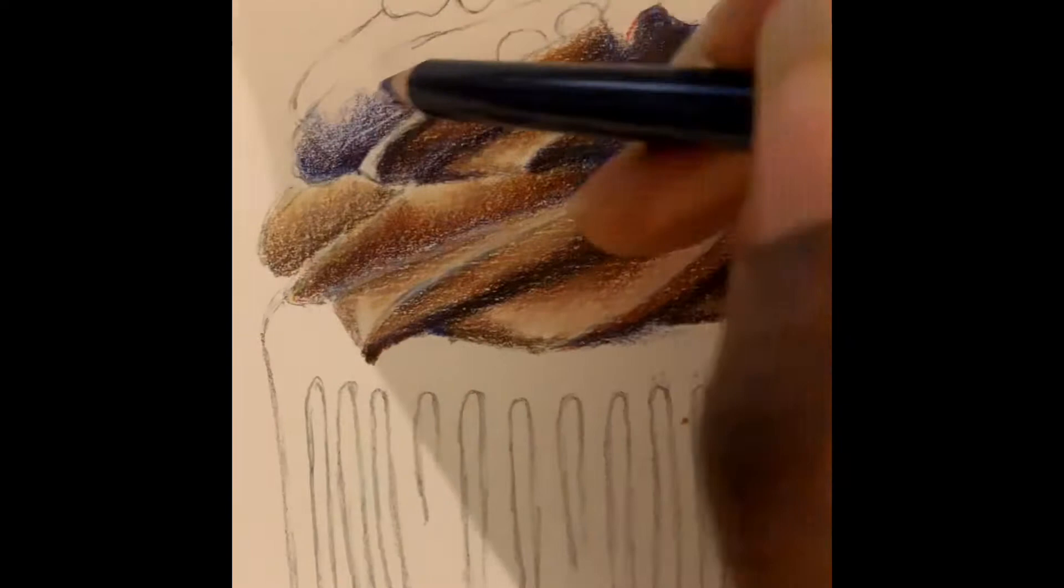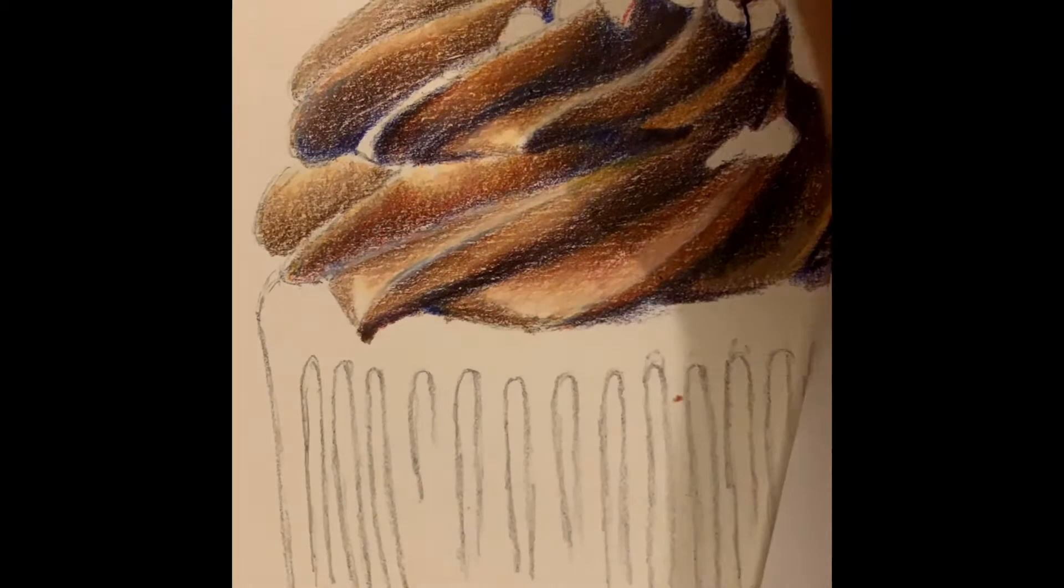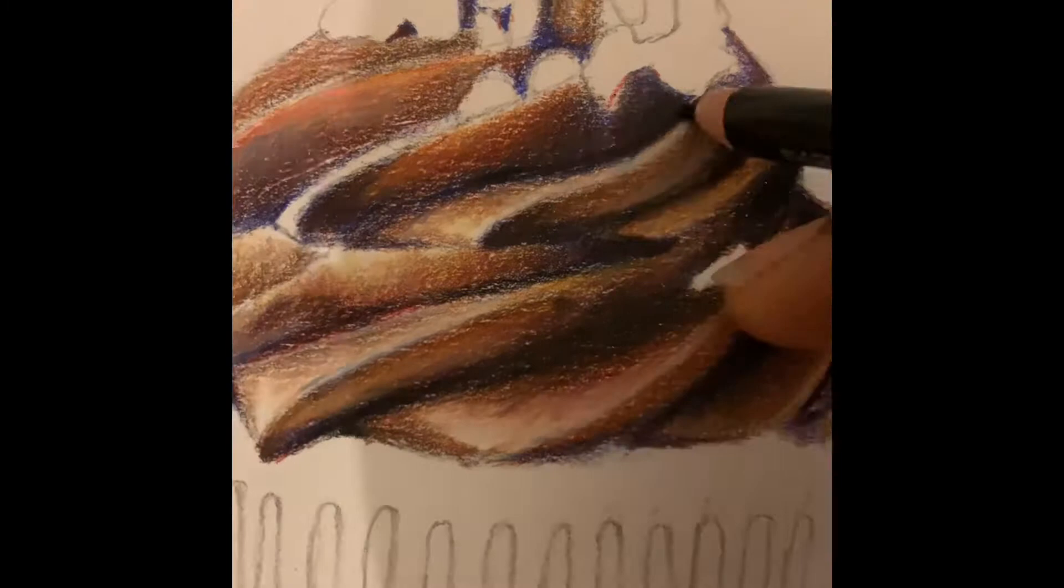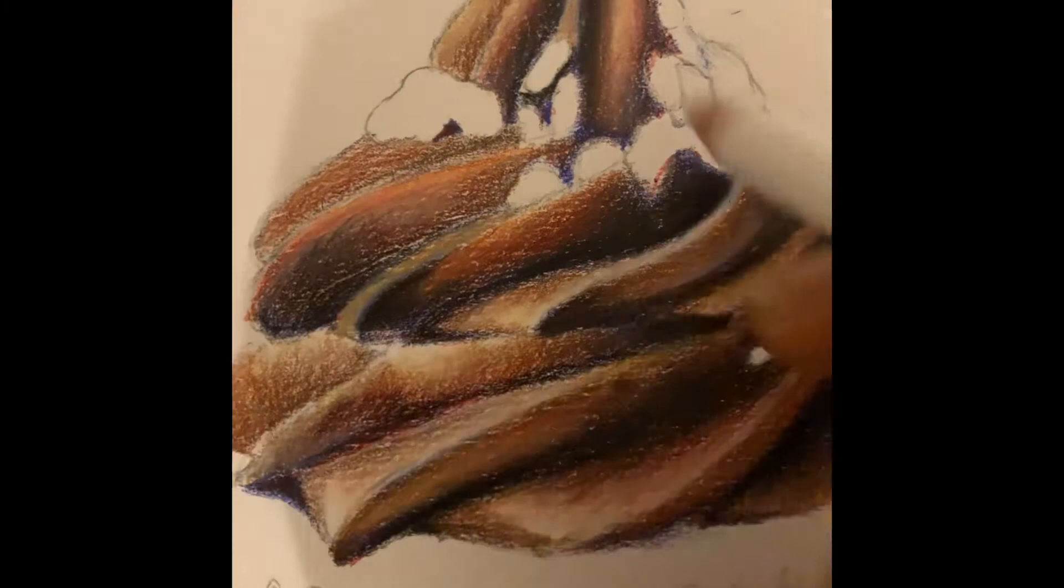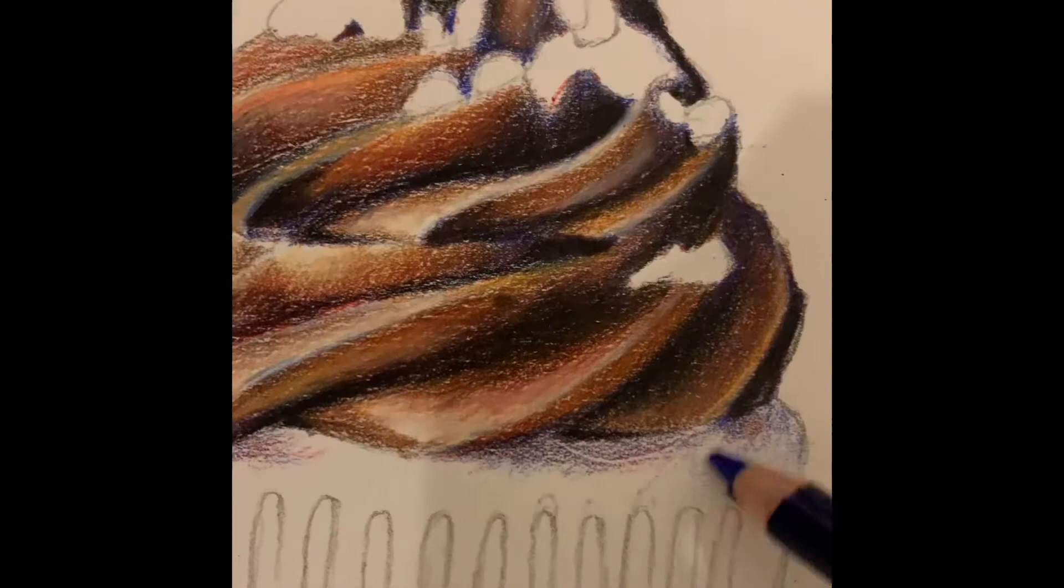Once I've done that, I'm going to work on the top of my chocolate icing here, and again just darkening the areas of my chocolate icing using black now to darken those areas. It's the same colors that I'm using throughout this part, just to darken in some of the areas.